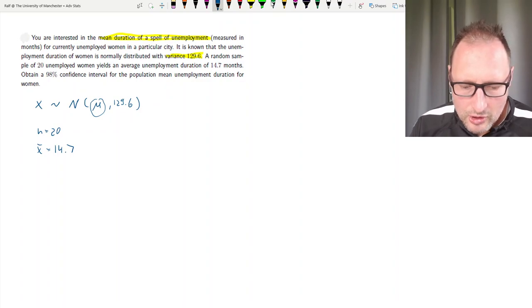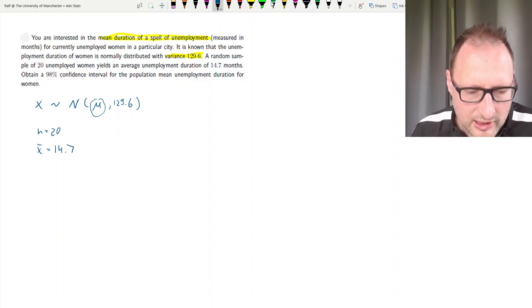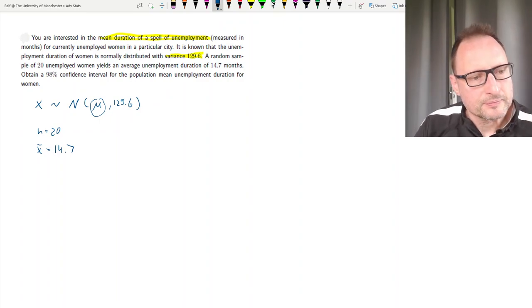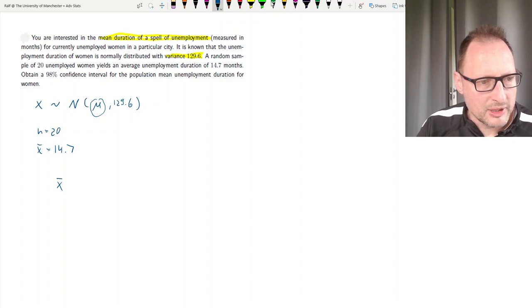So what we need to do here is we need to calculate a confidence interval. We know confidence intervals are calculated like this: our sample mean plus minus, and then there are two things. There is a value which comes from a distribution.